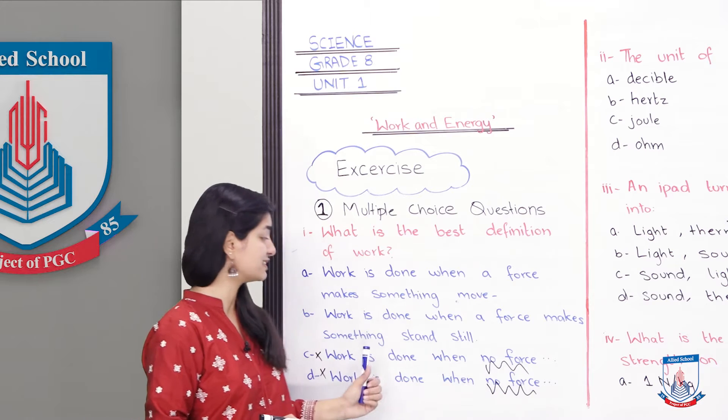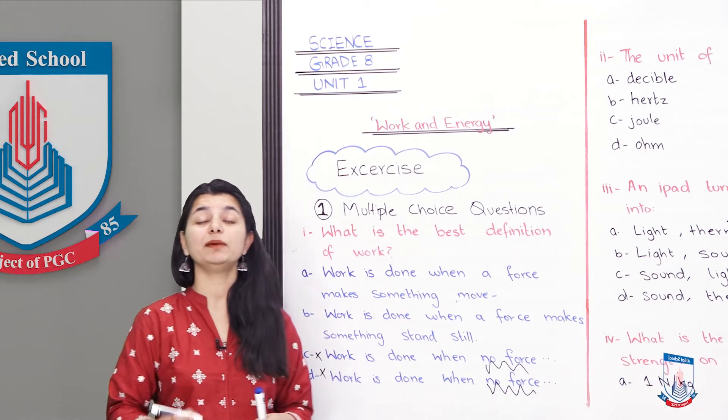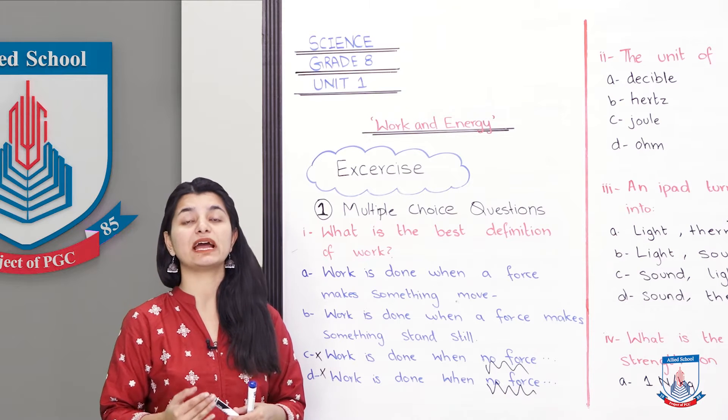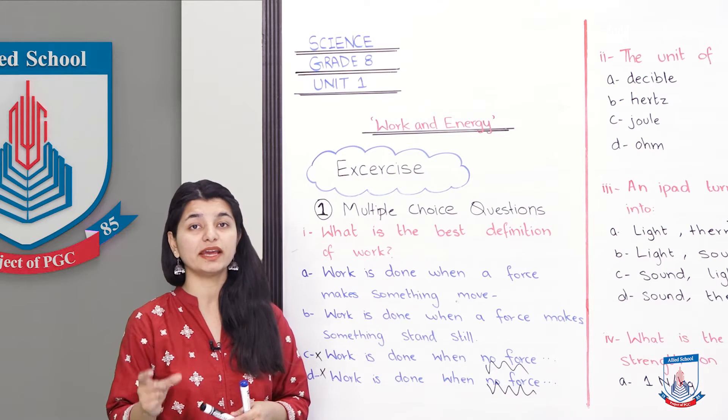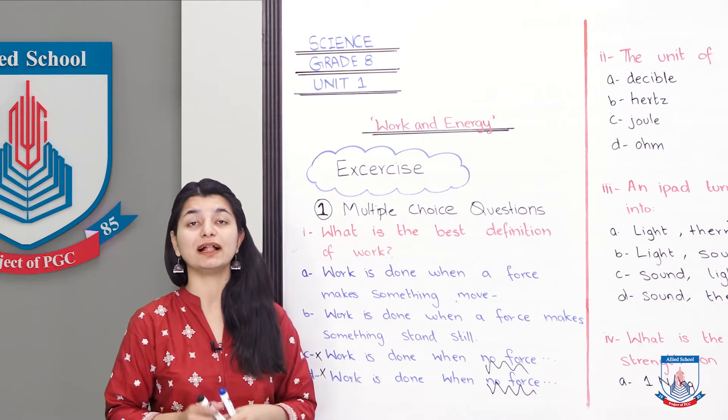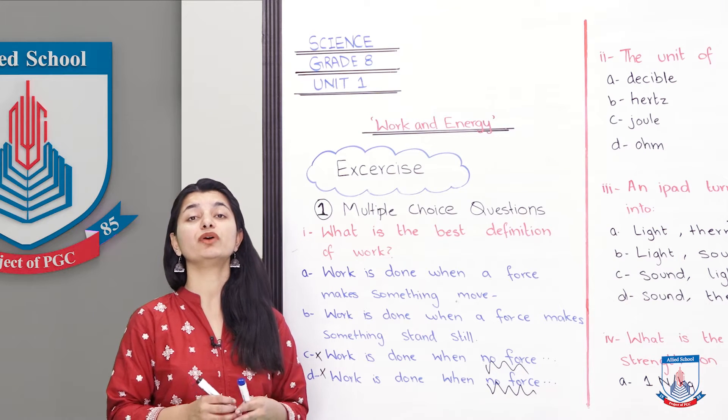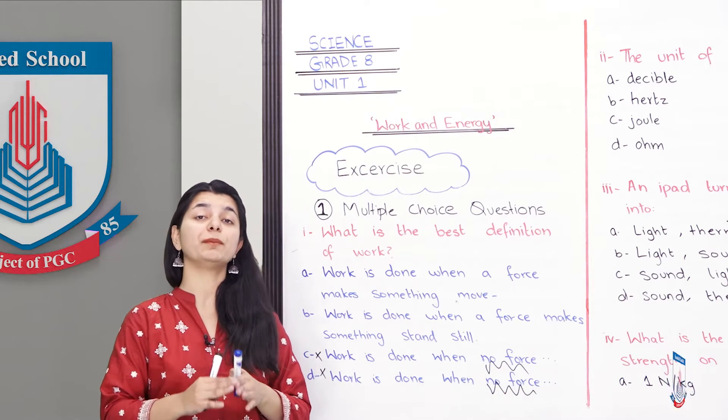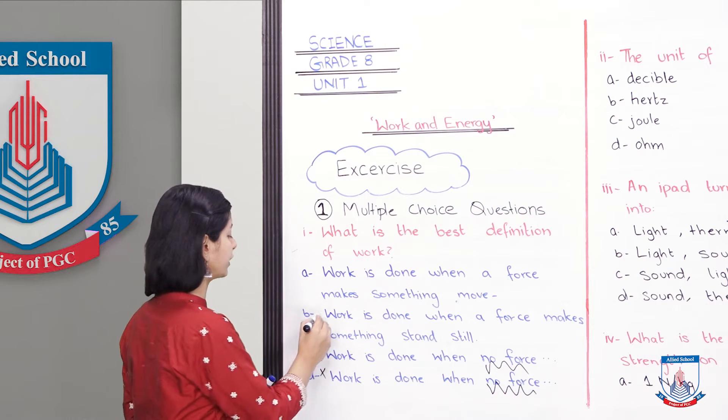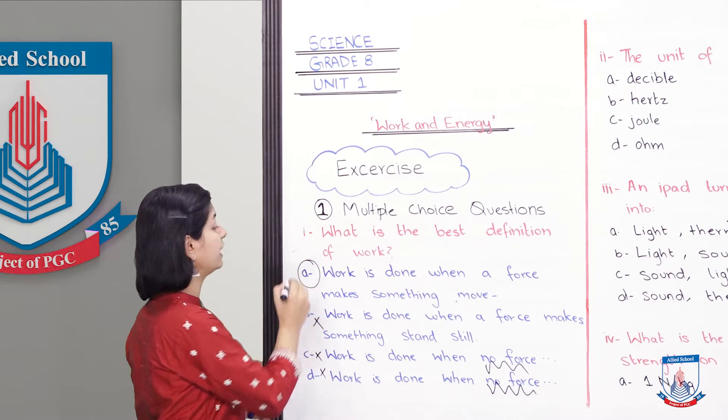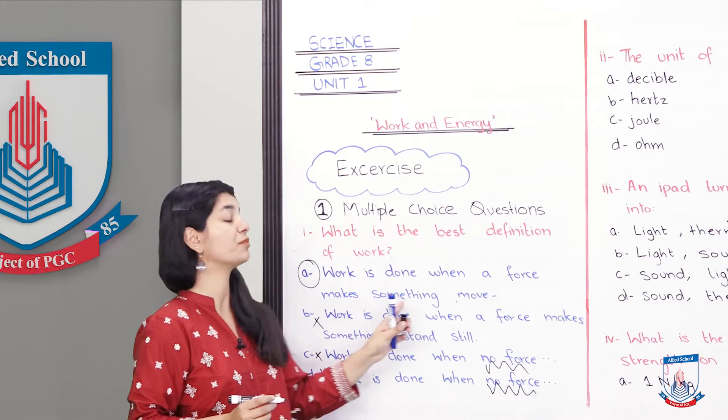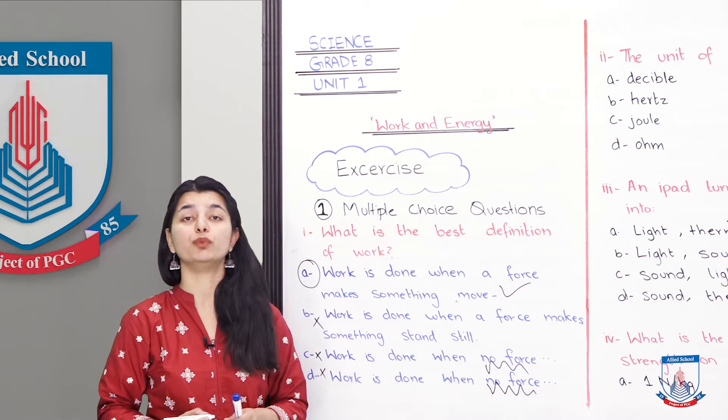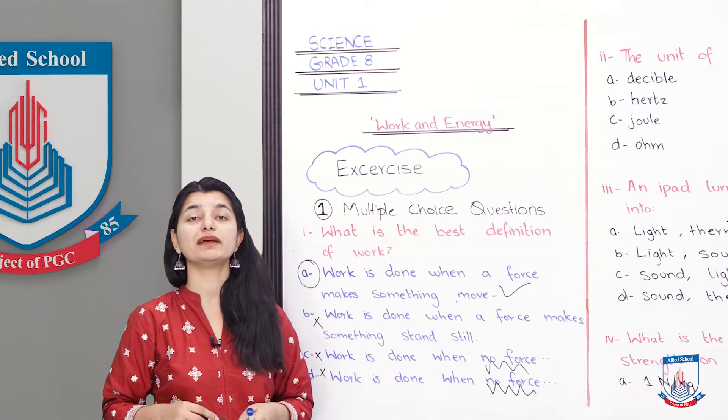Work is done when a force makes something stand still. Again, this is also incorrect. Why? Because work is done when something moves. The distance moves, you calculate the work. So if you stand still, it won't be a distance move because it stays in one place. So this is also wrong. That leaves us with option A. Work is done when a force makes something move. And that is the right answer or right definition for work.